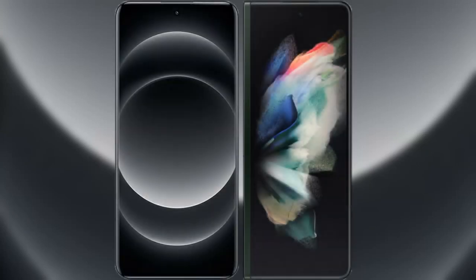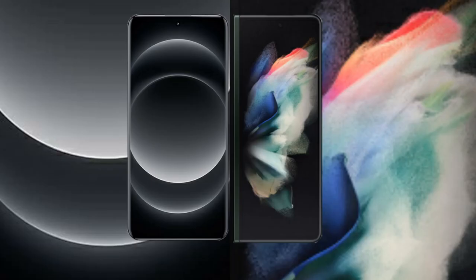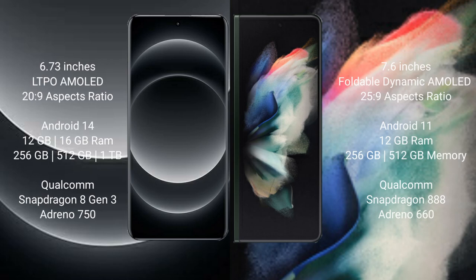I will compare the new Xiaomi 14 Ultra with Samsung Galaxy Z Fold 3. Xiaomi 14 Ultra comes with a 6.73-inch LTPO AMOLED display with an aspect ratio of 20:9. Samsung Galaxy Z Fold 3 comes with a 7.6-inch foldable dynamic AMOLED display with an aspect ratio of 25:9.